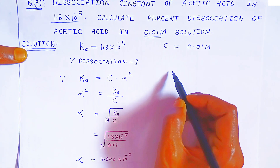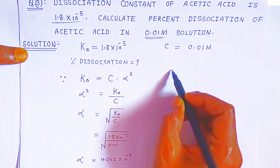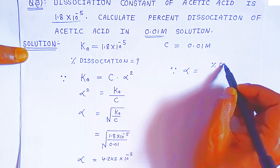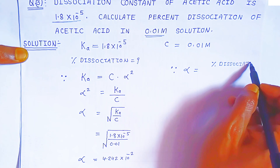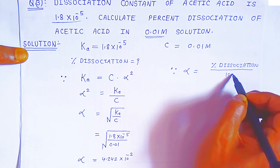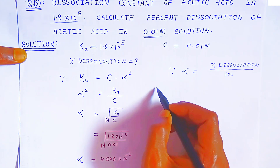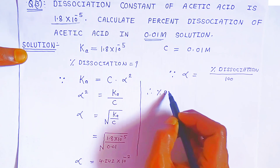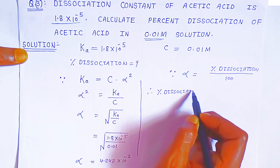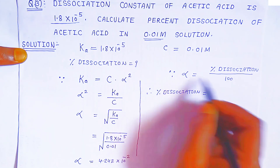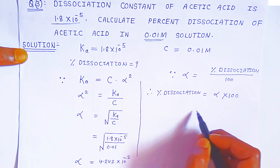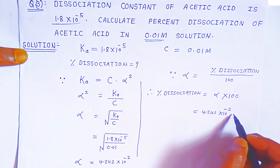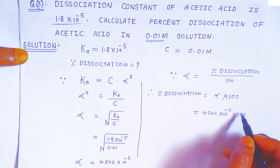Now since you know the degree of dissociation, the relation is: degree of dissociation equals percent dissociation divided by 100. So the percent dissociation will be alpha into 100. You know the alpha value is 4.242 into 10 raised to minus 2, and 100 can be written as 10 raised to plus 2.